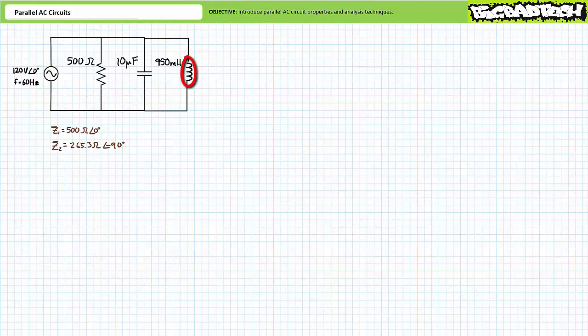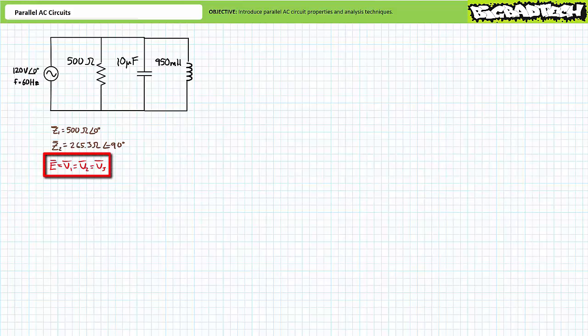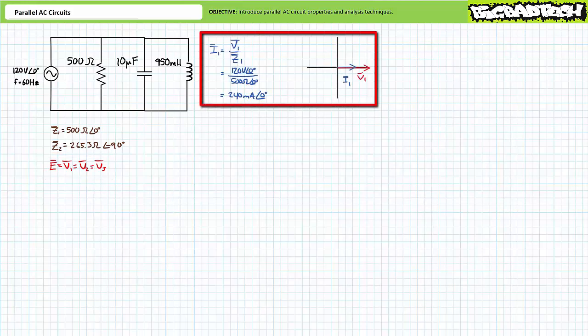Let's now consider the addition of a third element in parallel: a 950 millihenry inductor. The original parallel configuration of the resistor and capacitor still experiences the same voltage and draws the same current — the inclusion of an additional parallel path in no way affects these individual elements. Voltage across elements in parallel is the same: E equals V1 equals V2 equals V3. Voltage across resistive impedance Z1 remains 120 volts and current through it remains 240 mA at zero degrees. The phasor diagram for I1 remains unaffected.